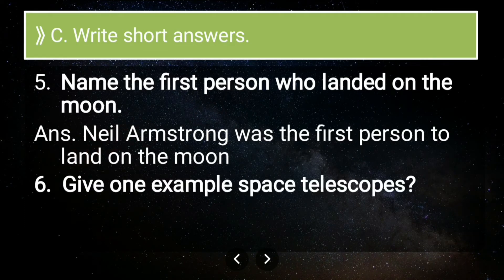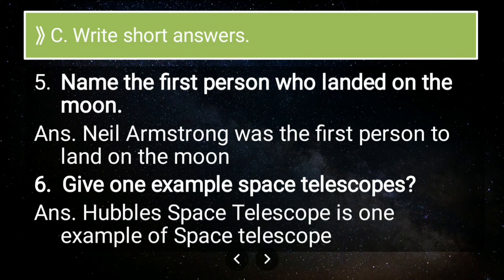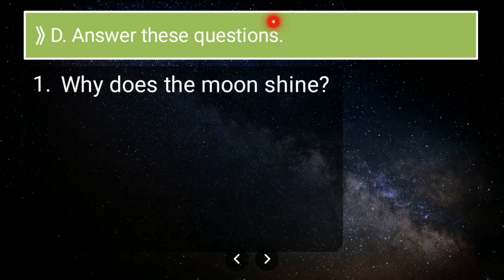Sixth short answer question: give one example of a space telescope. The answer is the Hubble Space Telescope, which is one example of a space telescope. It was launched into space by NASA and has helped us capture a lot of pictures in space. Now we move to question D — long answer questions.